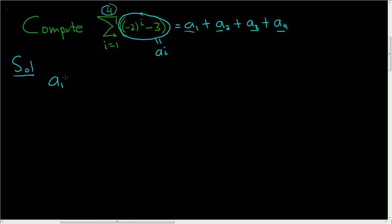So a sub 1 is negative 2 to the 1, right, you just replace the i with 1, minus 3. So negative 2 to the first power is negative 2, so you get negative 2 minus 3, which is equal to negative 5.